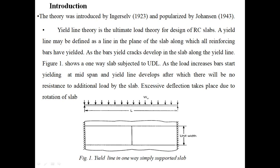As the load increases, the bar starts yielding. As the load is increased on the slab, it tends to bend. The maximum bending moment will be at the center, where a center line is developed due to yielding. The bar starts yielding at the mid-span and a yield line develops, after which there will be no resistance to additional load by the slab.